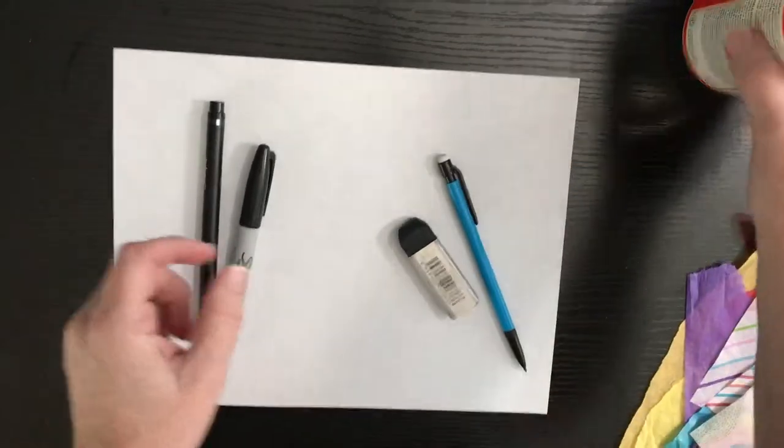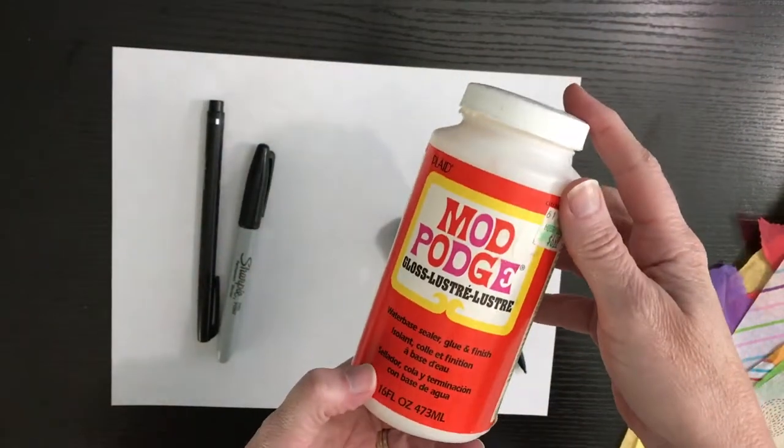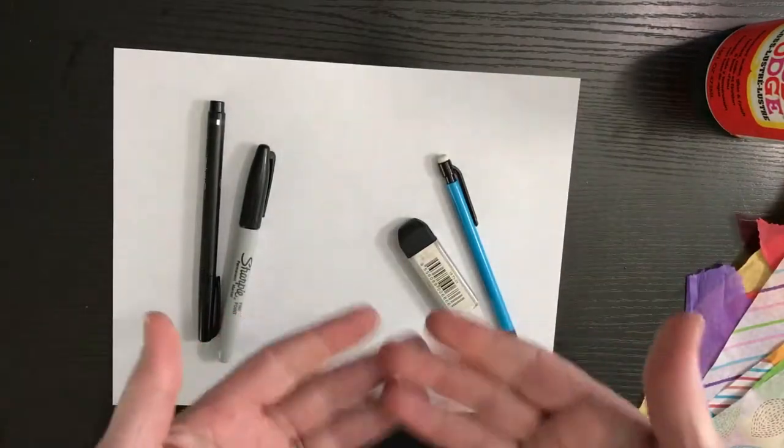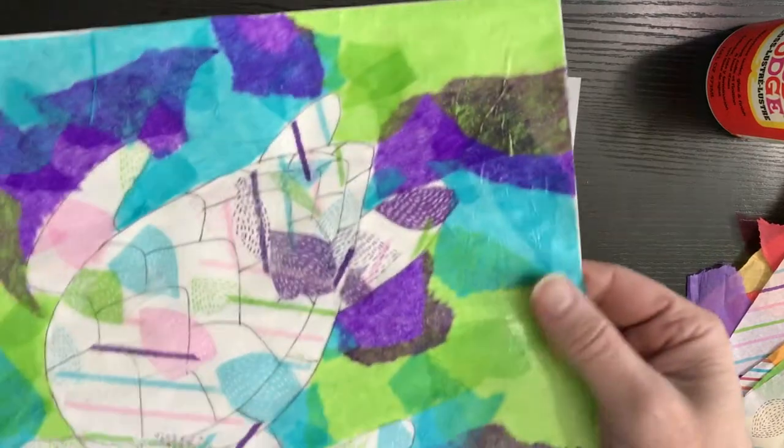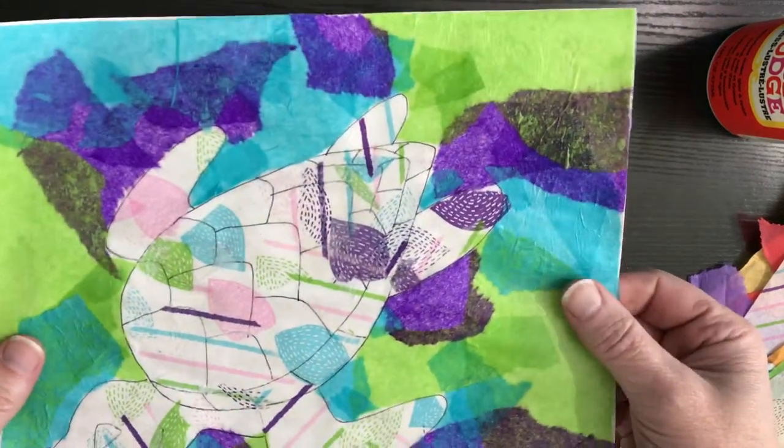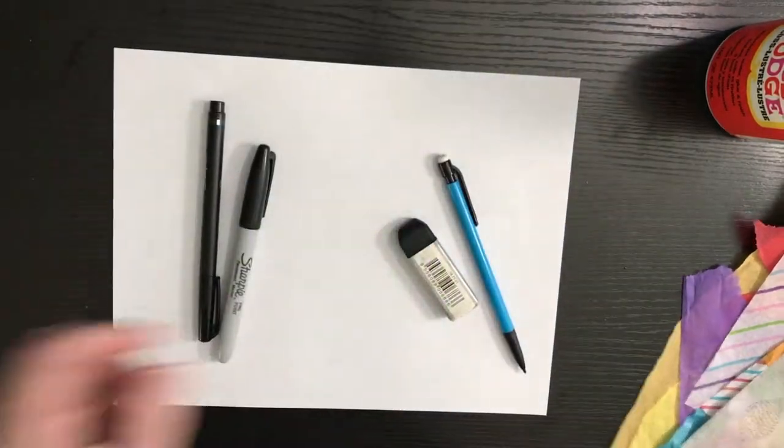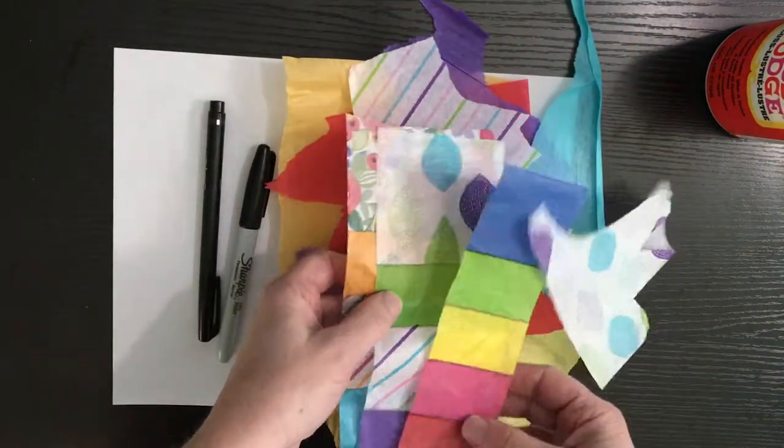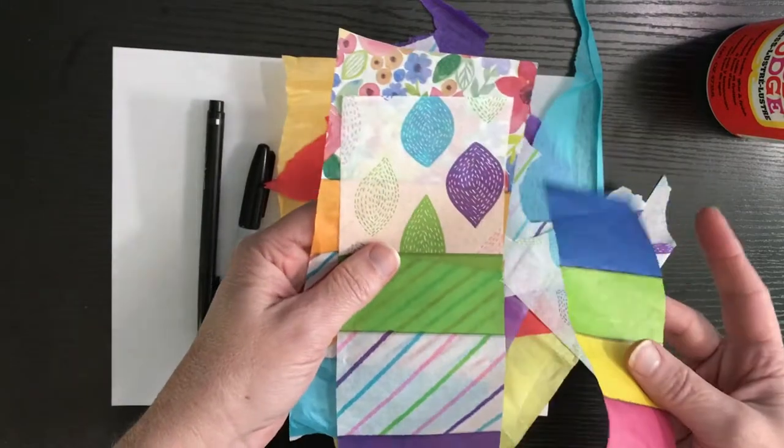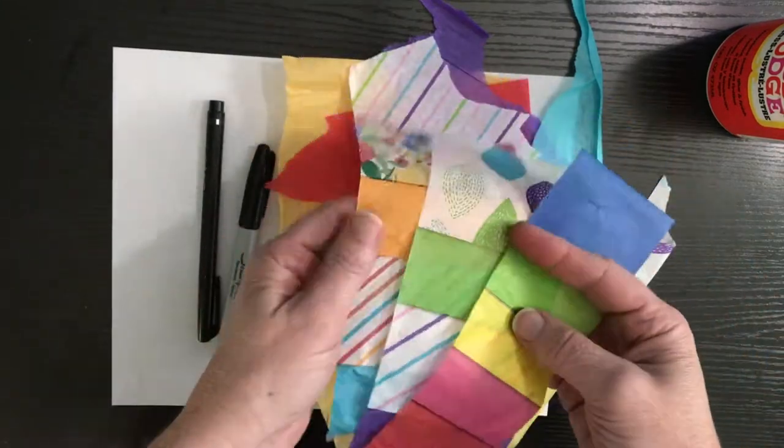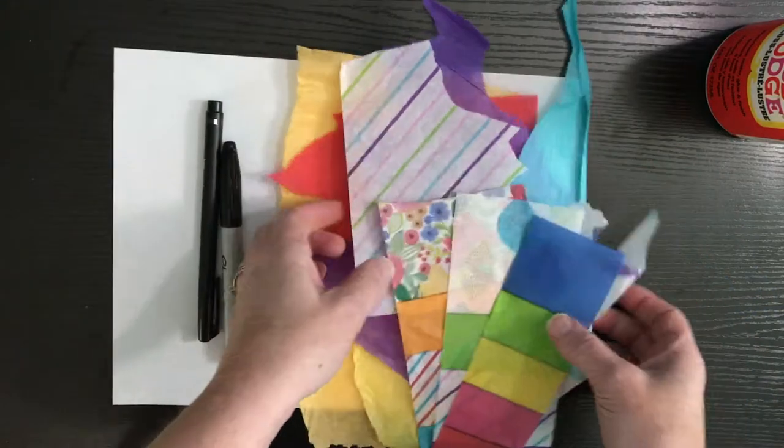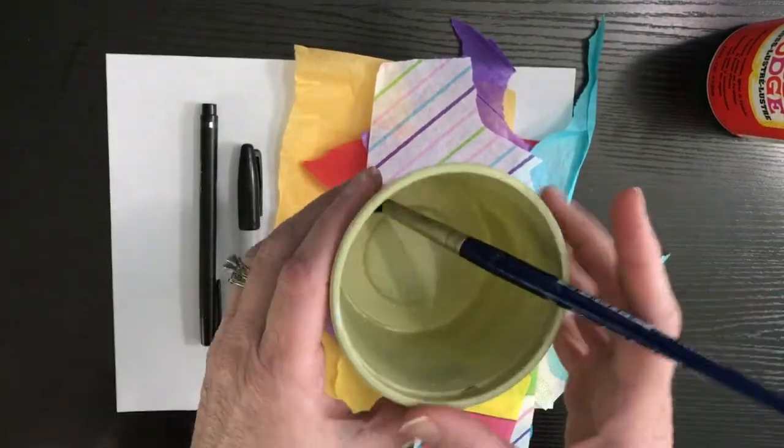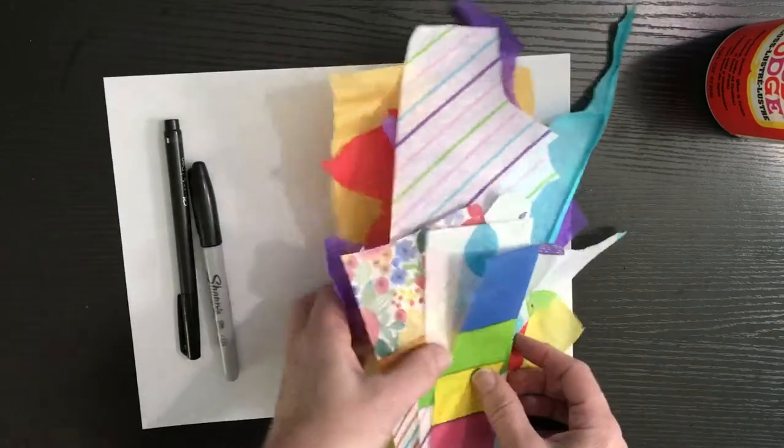You'll need an eraser, pencil, Mod Podge. If you don't have Mod Podge you can always use watered down white glue, but it won't have the shiny luster of the Mod Podge. You'll need some tissue paper. I purchased set packs that came with multiple different colors and those work the best. You'll also need a brush and a container for your Mod Podge.